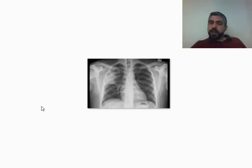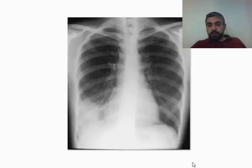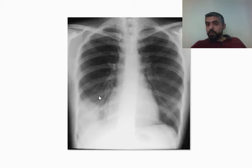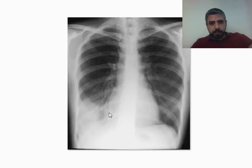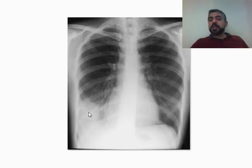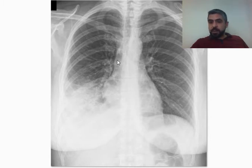Another example — back again to right upper lobe consolidation. You can see the transverse fissure, obvious increased opacity in the right upper lung zone. Now, there is also opacification of the right lower lung zone. We have two lobes there: the middle and the lower lung lobe. The middle silhouettes the heart, not the diaphragm, while the lower lobe silhouettes the diaphragm, not the heart. Can you see the diaphragm? No. Can you see the heart? Yes. This indicates right lower lobe consolidation. In the next example, you can see the right heart border but cannot see the right hemidiaphragm — again indicating right lower lobe consolidation, with the right hemidiaphragm silhouetted.